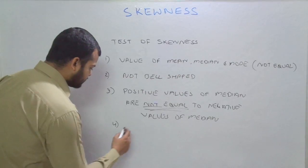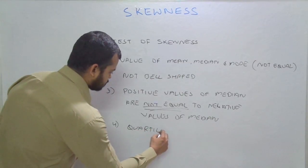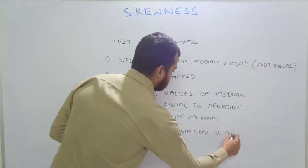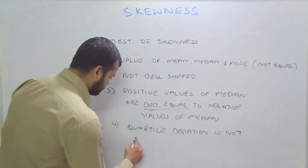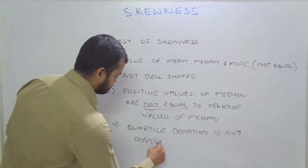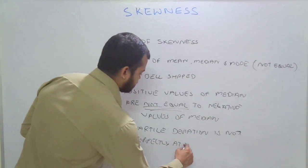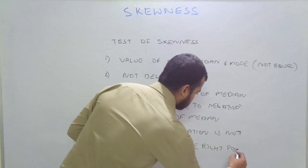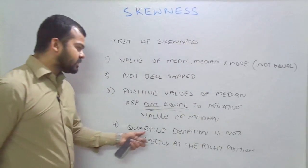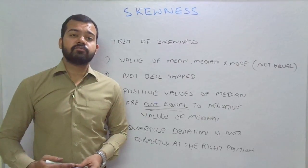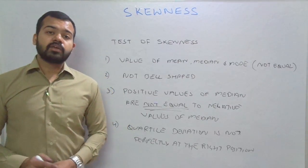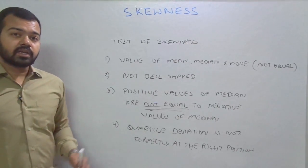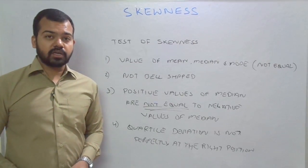The fourth and last test: the quartile deviation is not perfectly at the right position when we compare with the value of median. We can also conclude that the series is skewed. So these are the four tests by which we can consider that the series is skewed or has some asymmetry.